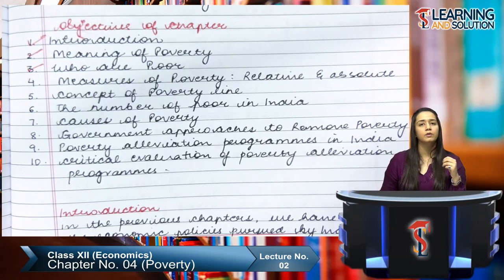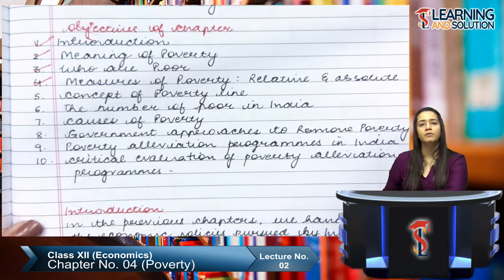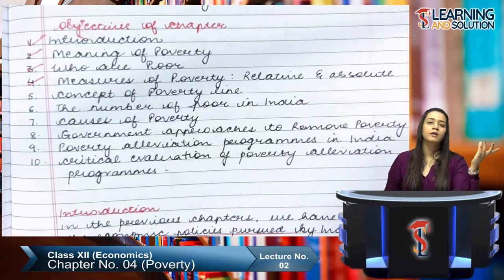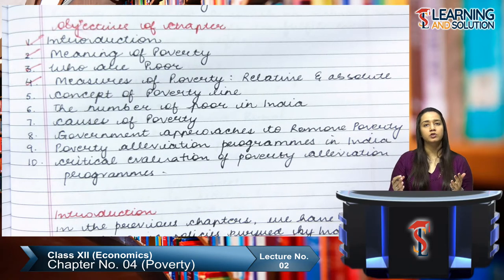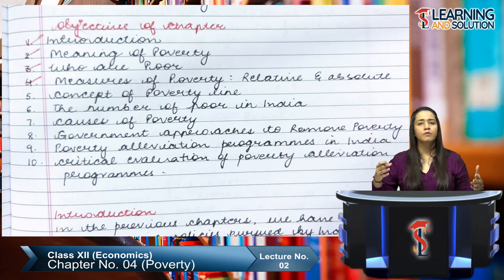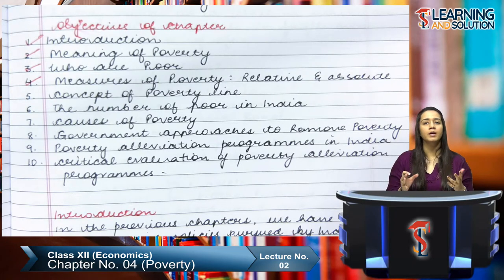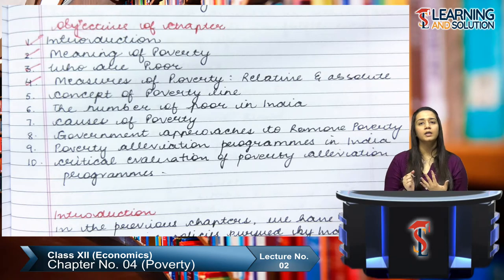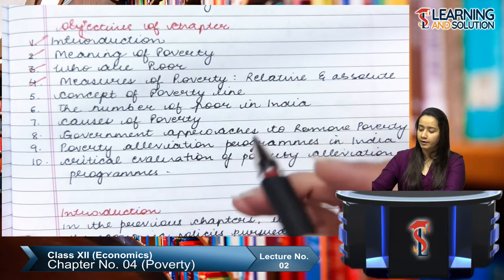Urban poor is basically the overflow of the rural poor. After that we talked about measures of poverty — relative and absolute. Relative poverty is when we compare two people, nations, or regions, for example comparing India to Pakistan. Absolute poverty is when we define the whole measure for a single nation — like saying 22 percent of India's population is poor — without making a comparison.